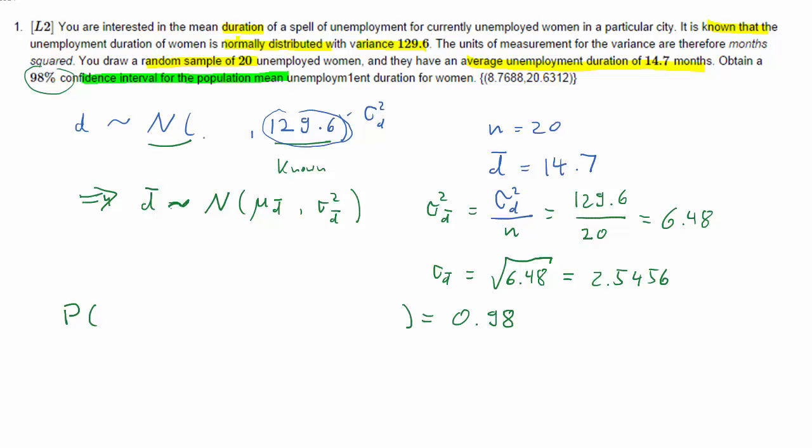In this case we want a confidence interval for the population mean, that is this mu d, the unknown average length of unemployment spells, and we'll have a lower and an upper boundary that will be centered around our sample average d bar, and then we'll subtract something and that is a product of two things.